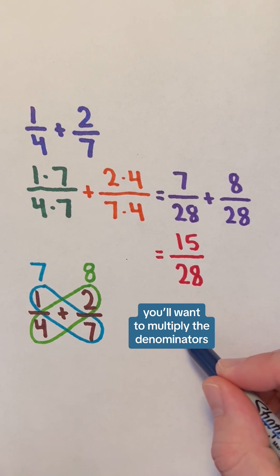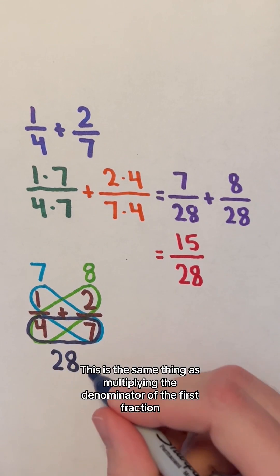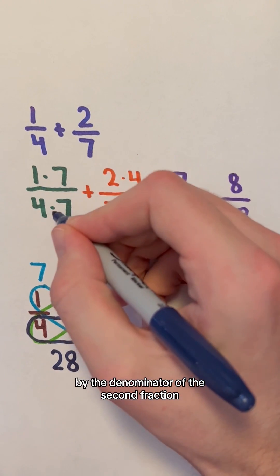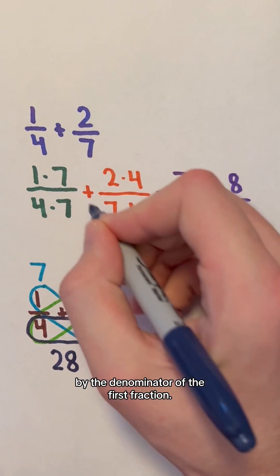Next, you want to multiply the denominators of both fractions, so 4 by 7 to get 28. This is the same thing as multiplying the denominator of the first fraction by the denominator of the second fraction, or multiplying the denominator of the second fraction by the denominator of the first fraction.